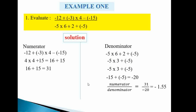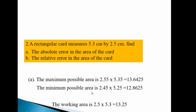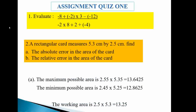Question one assignment: Evaluate negative 8 divided by negative 2, times 3, minus negative 12 — all over negative 2 times 8 divided by 2 plus negative 4. Write it down and work it out.